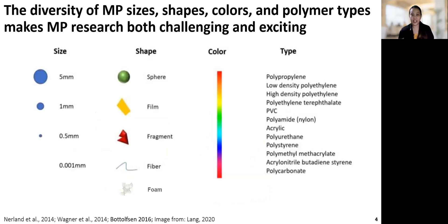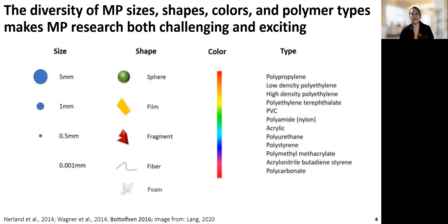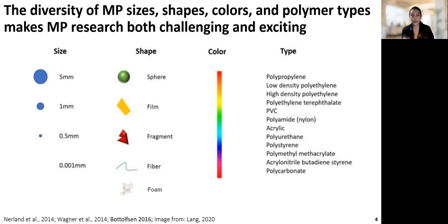MPs come in a variety of sizes, shapes, colors, and polymer types. MP sizes range from 1 µm to 5 mm, and they can be further classified into small MPs which are less than 1 mm, and large MPs which range from 1 mm to 5 mm. In terms of shape, MPs can take the following forms: spheres or pellets which are hard rounded particles, films which are thin planes of flimsy plastic, fragments which are hard with jagged outline, fibers which are thin fibrous or straight plastics, and foam which is lightweight and sponge-like.